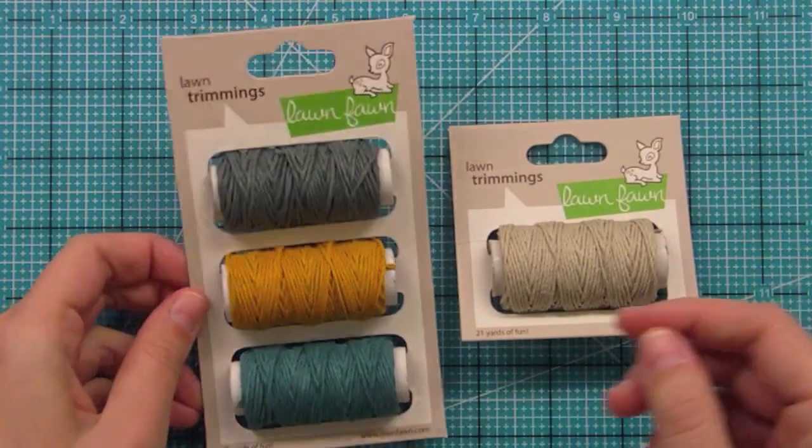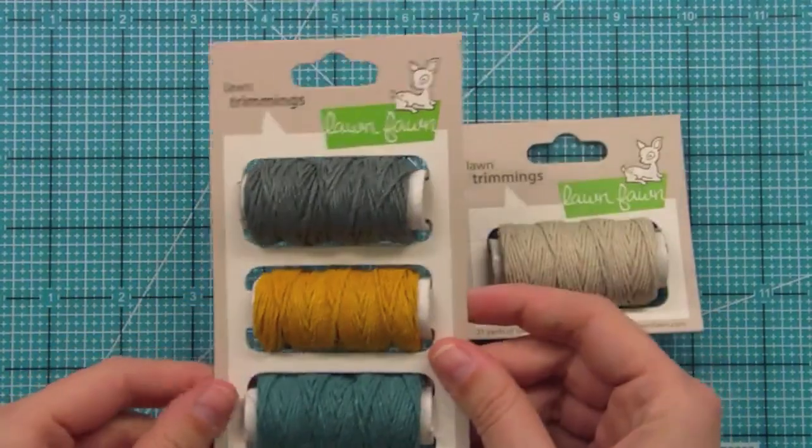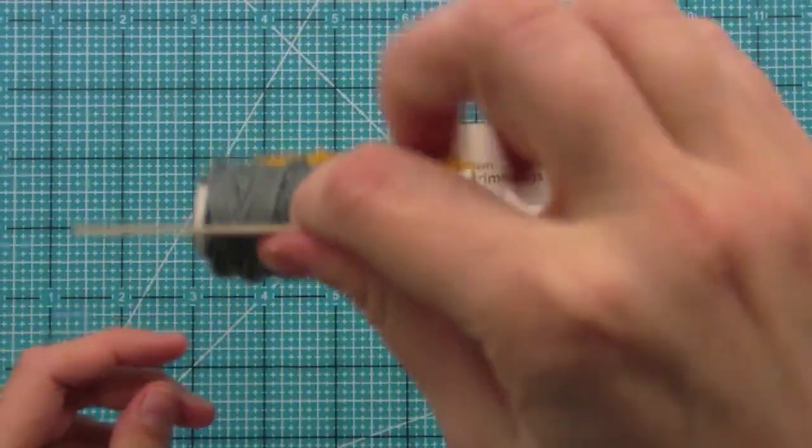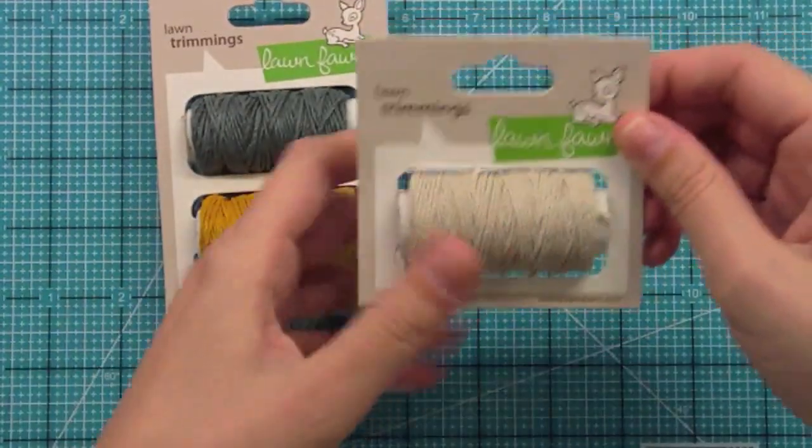One really cool thing about our packaging is these spools actually turn on the package. So if you had a clip it up or one of those things where you can clip up products, you can actually spin the cord right off of the packaging. And this one spins also.